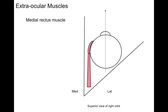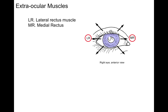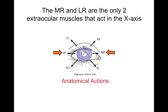The medial rectus muscle is then the antagonist. It will adduct the eye in that horizontal plane, causing the eye to look towards the nose — adducts the eye. The medial rectus and lateral rectus are the only two extraocular muscles that act purely in that horizontal axis.